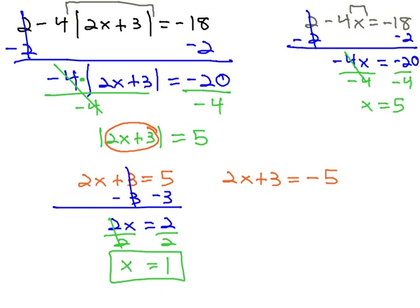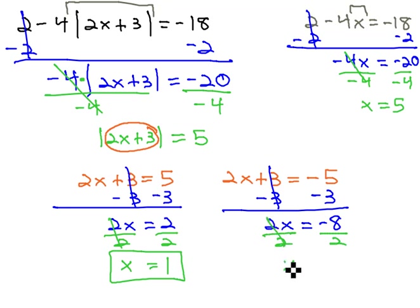Similarly, we can solve the other equation by subtracting 3, giving us 2x equals negative 8, and then dividing by 2, giving us x equals negative 4.